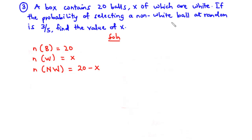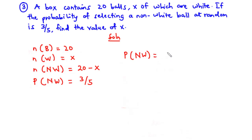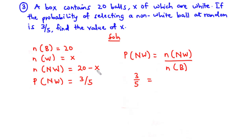The probability of selecting a non-white ball at random is 3 over 5. The probability of selecting a non-white ball equals the number of non-white balls divided by the total number of balls in the box. So we have 3 over 5 equals 20 minus X divided by 20, since the total number of balls is 20.